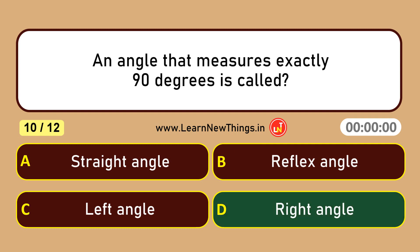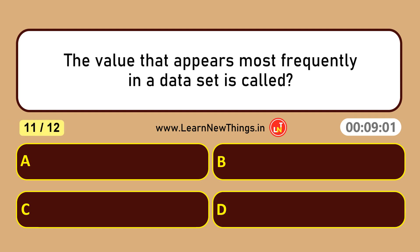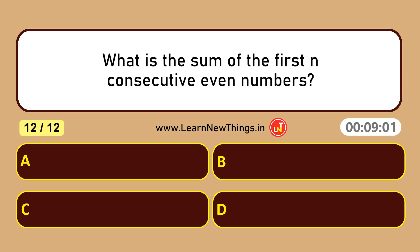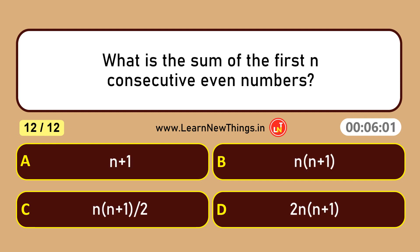The value that appears most frequently in a data set is called mode. What is the sum of the first n consecutive even numbers?